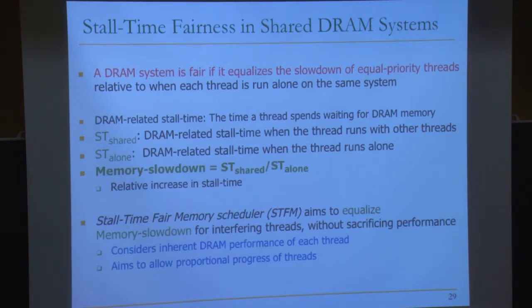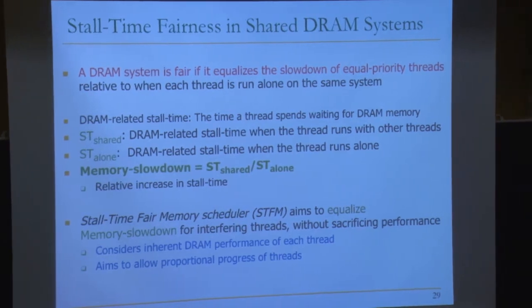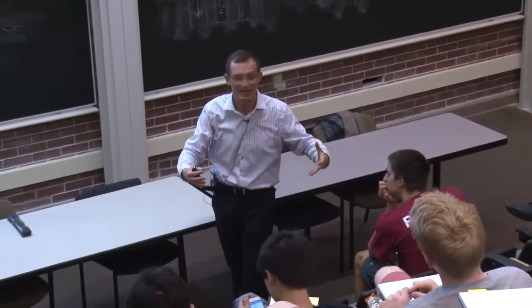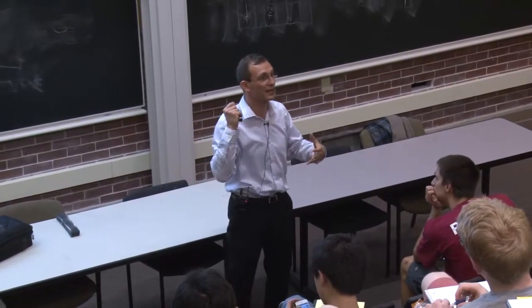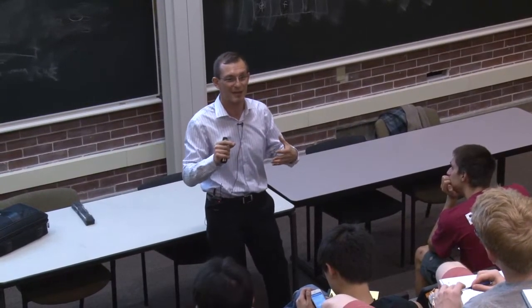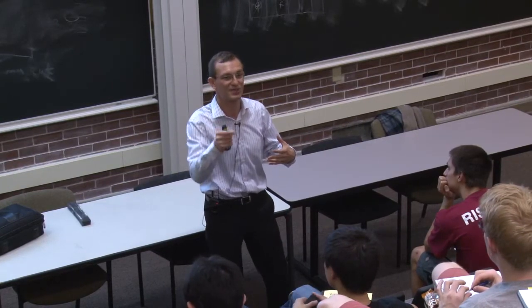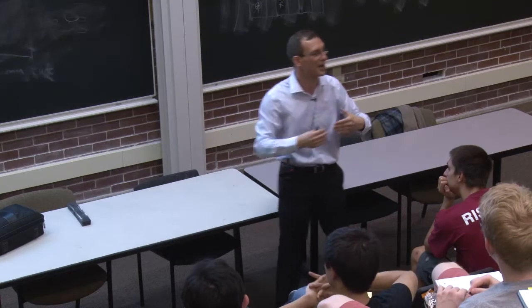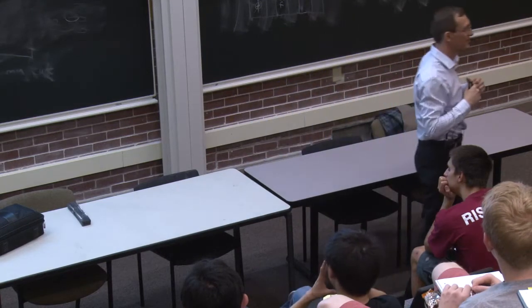The idea of STFM — stall time fair memory scheduling — is to equalize memory slowdown for interfering threads without sacrificing performance. This aims to allow proportional progress of threads, which is a good thing from an operating system point of view. If the OS is scheduling four applications on a four-core system assuming they all make progress, but the hardware is unfair, one may make only minimal progress.